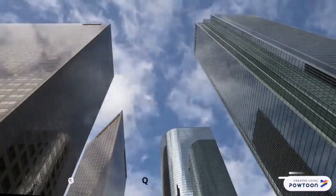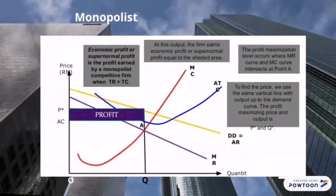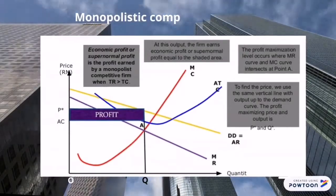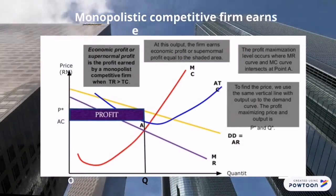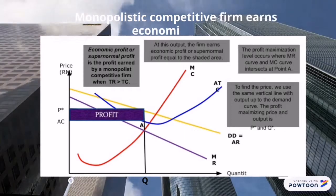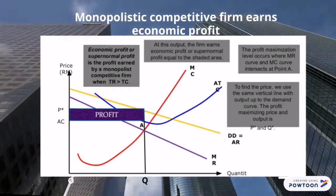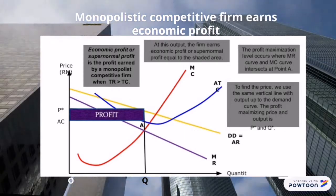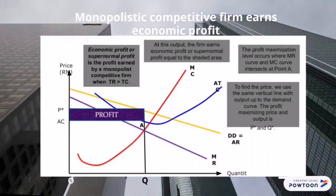Economic profit in the short run — economic profit or supernormal profit is the profit earned by a monopolistic competitive firm when total revenue exceeds total cost. The profit maximization level occurs where the MR curve and MC curve intersect at point A.